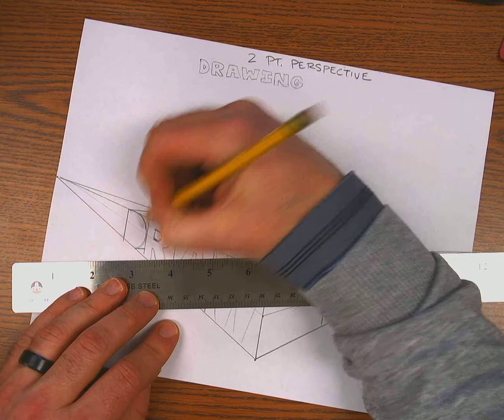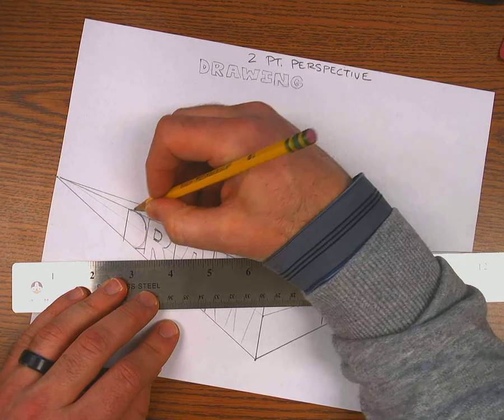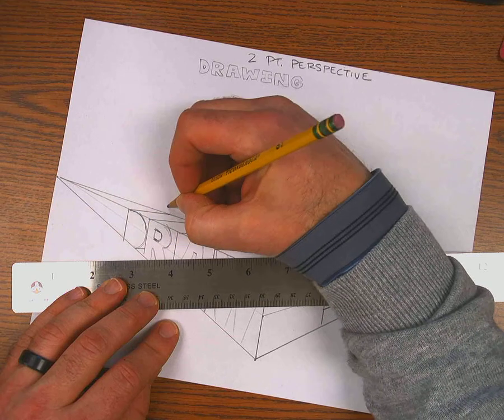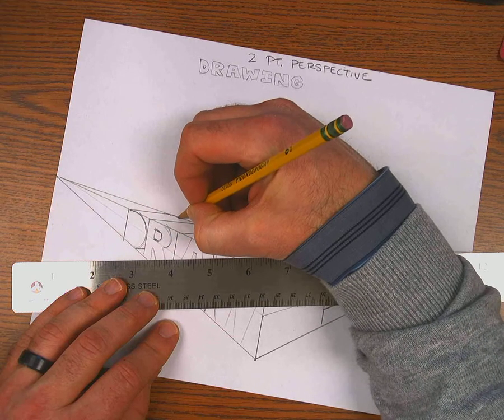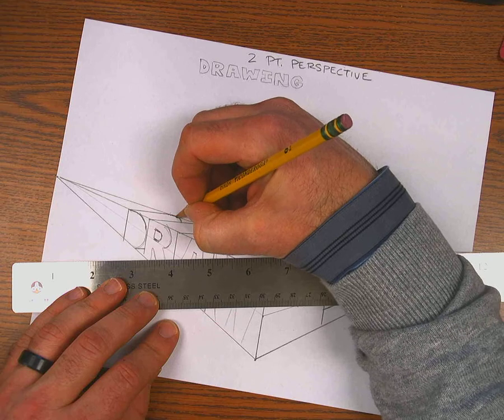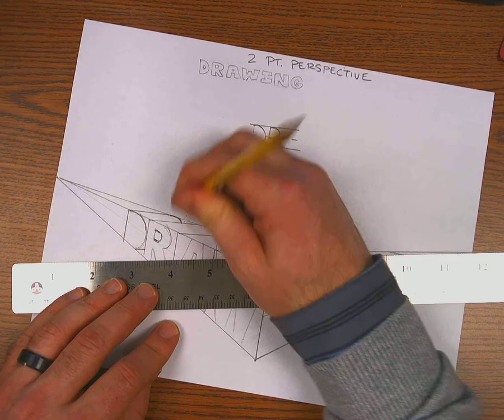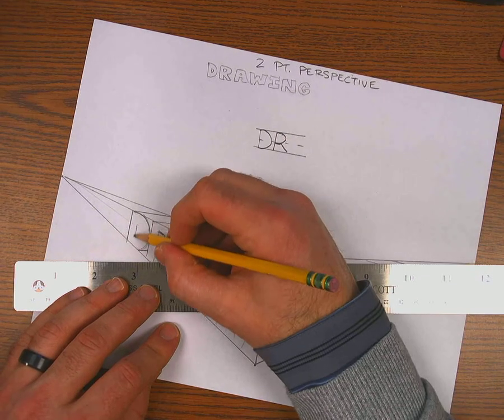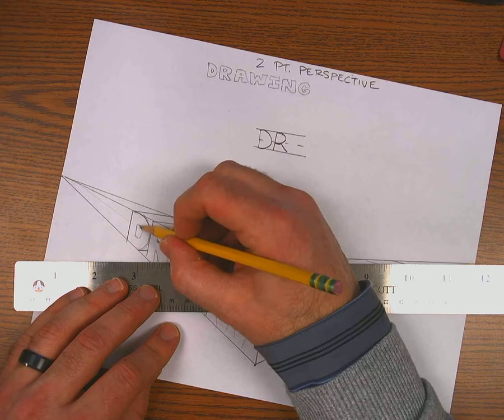And for this D, the only other thing I need to do, if you look right here, the D comes out, starts to curve down about the middle. So I'll go straight across here and start to curve down. You've got to remember the back is the same as the front. This is a block. We're carving out this letter. The back of the block is the same as the front. And I didn't even do the inside of the D. So I'll do that now.